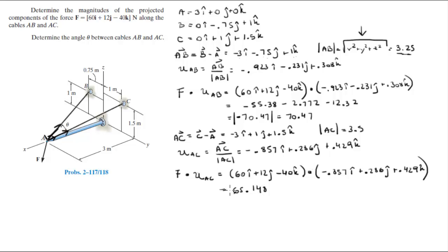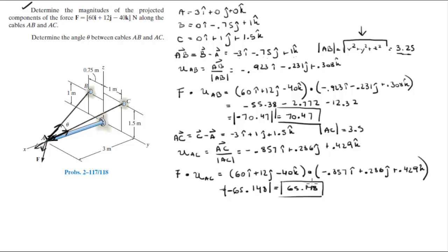This result is negative, but they're asking for the magnitude, so the magnitude is positive: 65.148. The negative sign, since we calculated from A to C, means the component is acting in the opposite direction. That completes the first part — we have the magnitude of the projection along AB and the magnitude of the projection along AC.